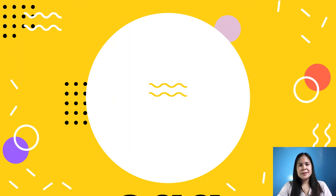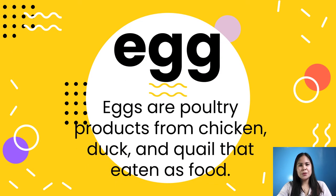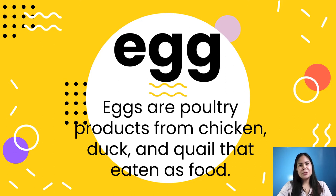Let us define the word eggs. Eggs are poultry products from chicken, duck, and quail that are eaten as food. It is a food product produced from poultry that is used as both an ingredient and a main dish for baked foods. Eggs have a hard shell of calcium carbonate enclosing a liquid white, a single yolk or an occasional double yolk, and an air cell. As we go along, we will be discussing more about eggs.